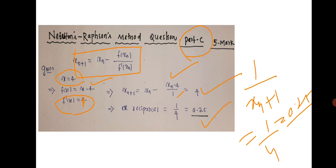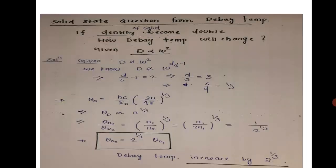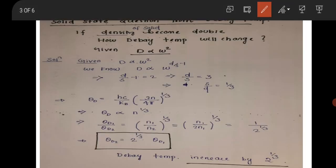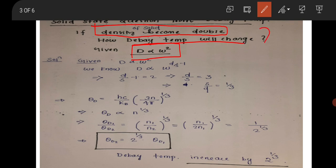Moving to the next question — this one is very important and is a famous question from Debye theory of solids. The question states that the density of states d is varying as omega squared. Then you are told the density of the solid becomes double, and you have to find how the Debye temperature theta_D will change.